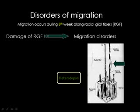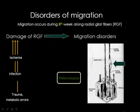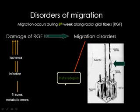Moving to disorders of migration: neurons migrate along radial fibers to reach the cortex. If disorders occur during this process, neurons stop in an abnormal location. Abnormal location of neurons is known as heterotopia — meaning normal gray matter in an abnormal location. The same causative factors — trauma, infection, ischemia, metabolic, genetic, chromosomal abnormalities — can damage the radial glial fibers, resulting in migrational disorders represented by heterotopia.